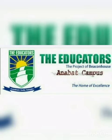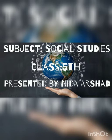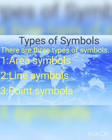Assalamu alaikum students, how are you all? Hope you all are fine and enjoying good health. Let's start our class. Today we are going to learn about different types of symbols. Mainly there are three types of symbols: the first one is area symbols, the second one is line symbols, and the last type is point symbols.